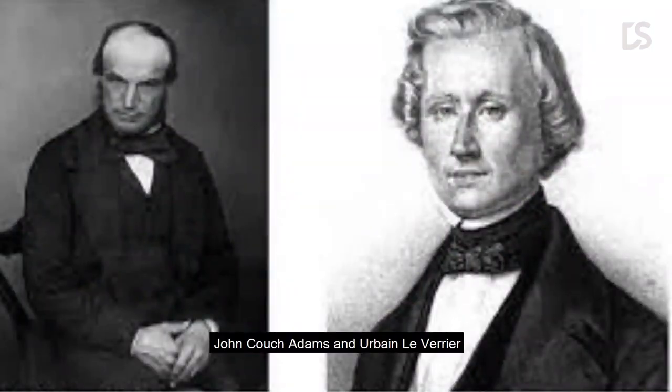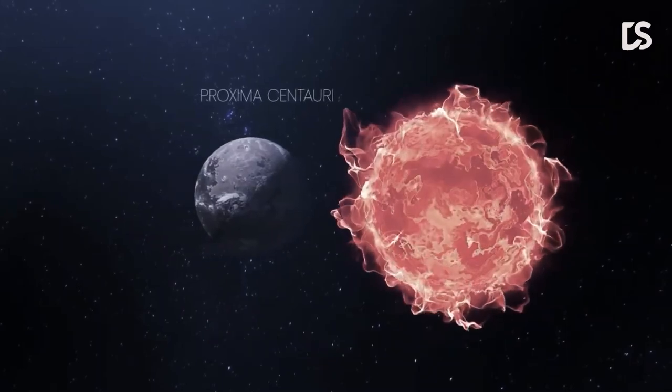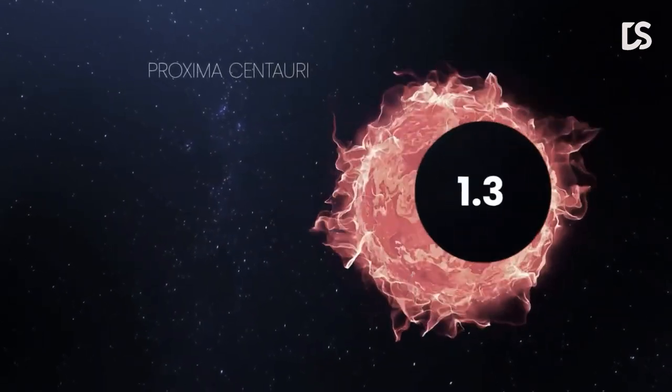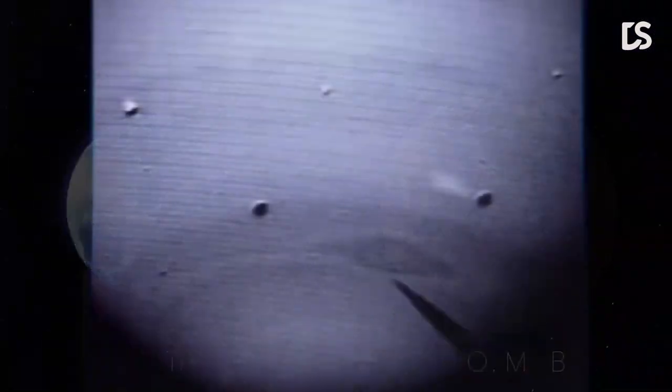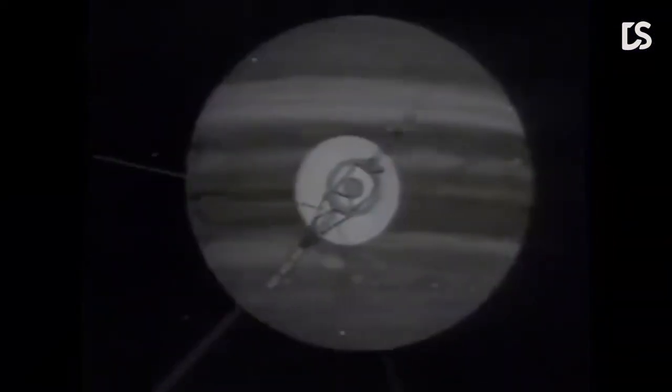John Couch Adams and Urbain Le Verrier, two astronomers, independently observed that Uranus' orbit appeared to be affected by a powerful, invisible source of gravity. They began looking and ultimately discovered Planet Eight.